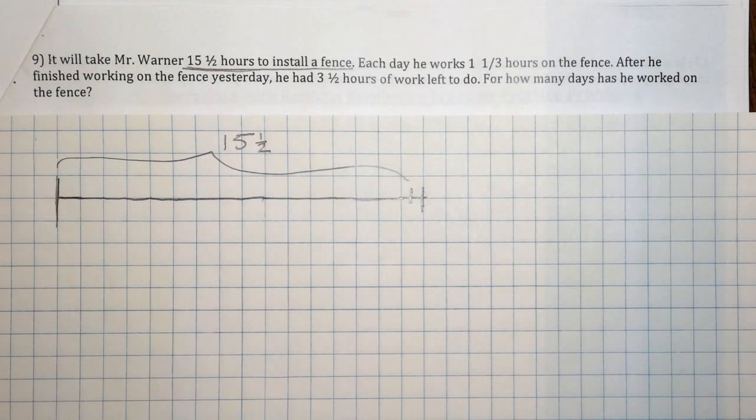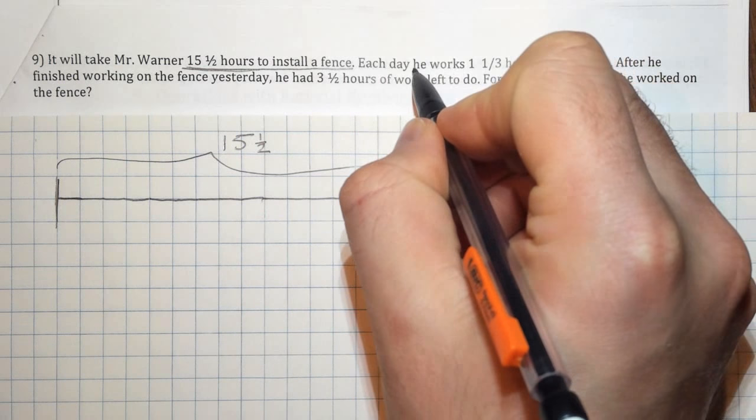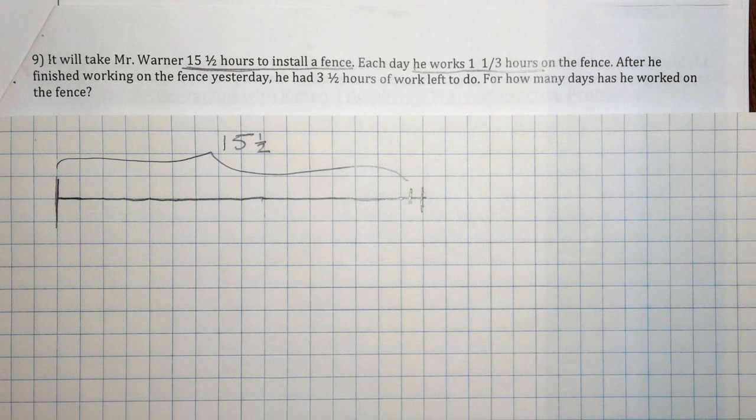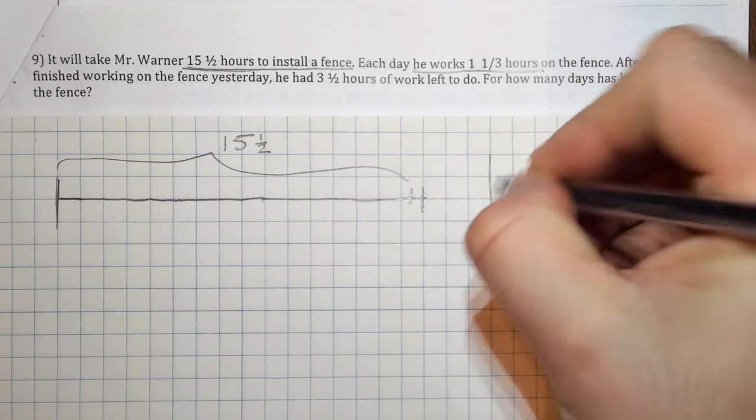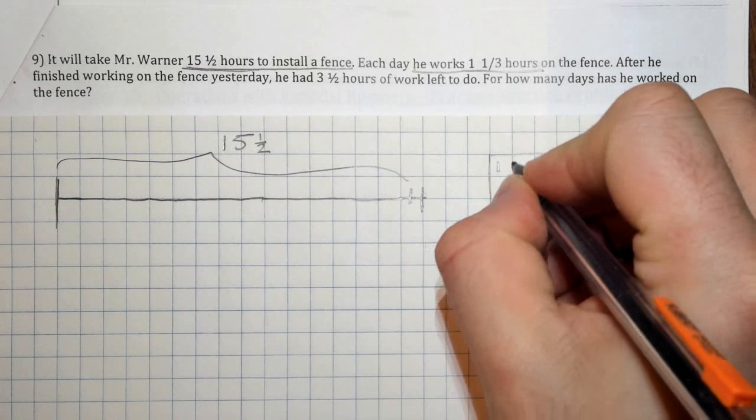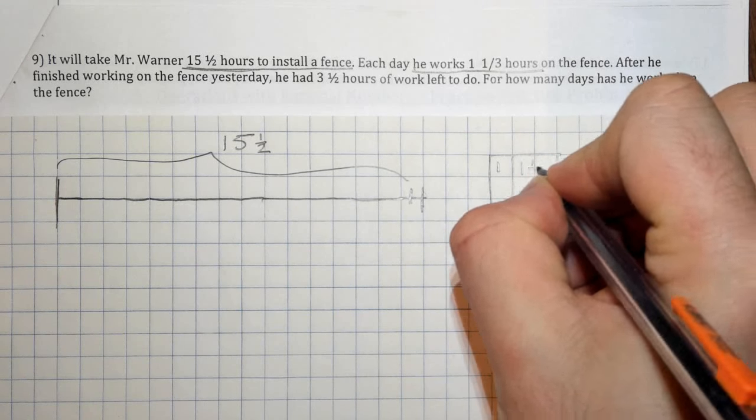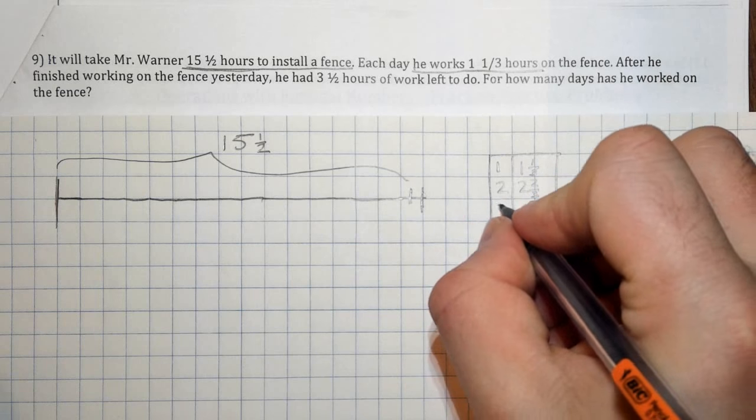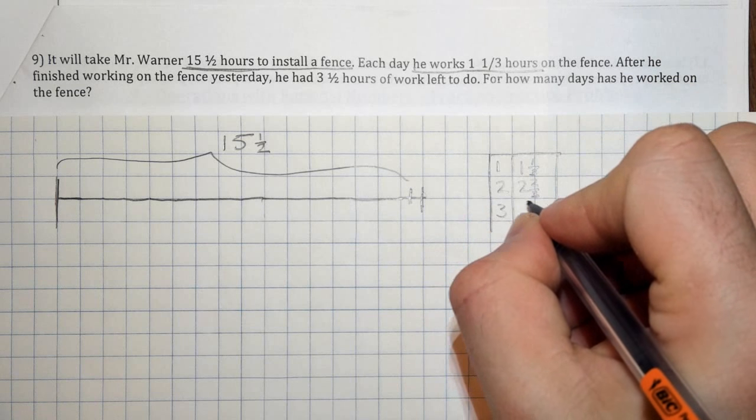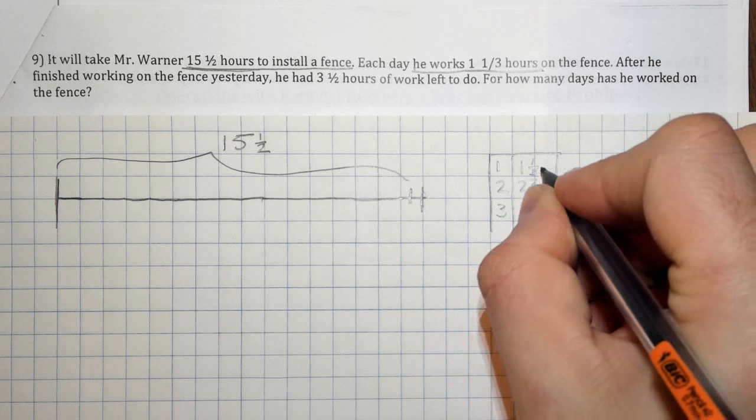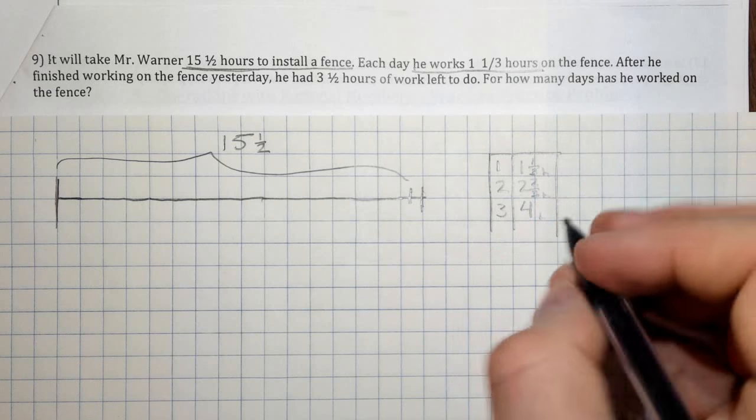Okay, so the next part is that each day we know he works one and one third hours. We can't really factor that in yet, but I can think of it over here in the table and do something like this where I say, okay, well after one day he's worked one and a third, after two days he's worked two and two thirds, after three days he's worked three plus one more third, so it would be four hours and so forth. So that's just to put it in perspective.